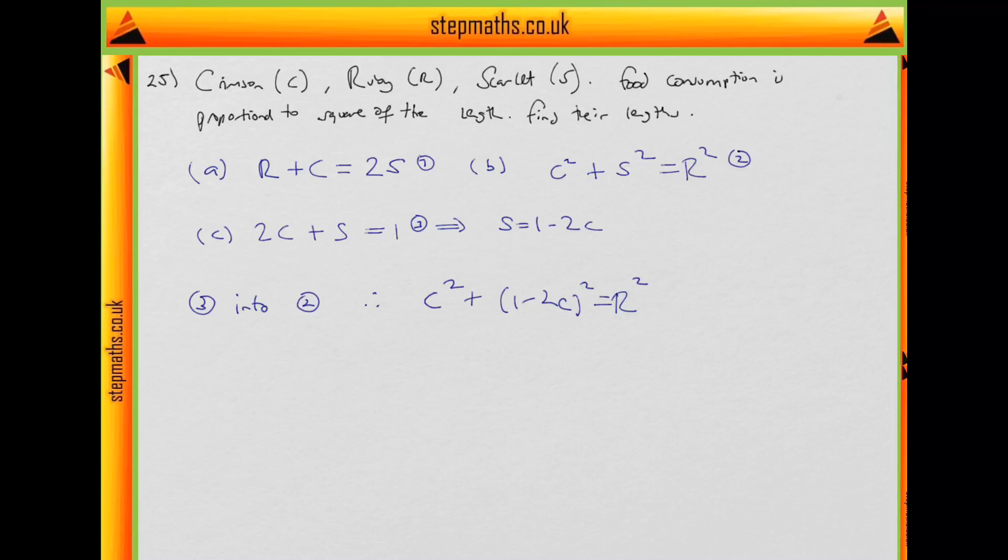But then we also notice up here that we can say, so 1 implies that in fact R equals to 2S minus C. And then we see from 3 that S is equal to 1 minus 2C, that's 1 minus 2C times 2 minus C. Well, that's 2 minus 4C minus C, which is 2 minus 5C. So we can replace R with 2 minus 5C.